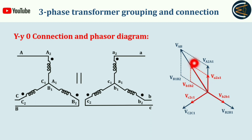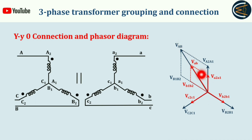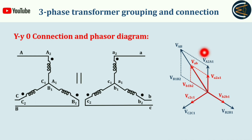If you draw the resultant of the secondary side line voltage, you get this configuration: V_ab is the phasor, and as you can see V_AB and V_ab have zero phase difference — they are aligned with each other. This proves zero phase difference between them, which is the proof of the YY0 connection.